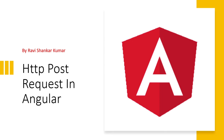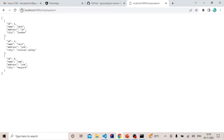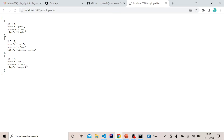We will post our form data and save it into the fake JSON server that we had created. If you haven't watched my fake JSON data creation video, I will put the link in the description — please go through it first. I had created a fake API of this employee list which gives a list of employees with fields: ID, name, address, and city.